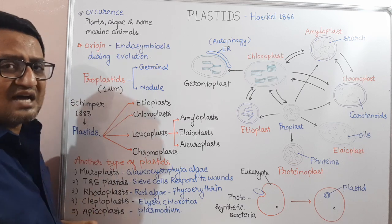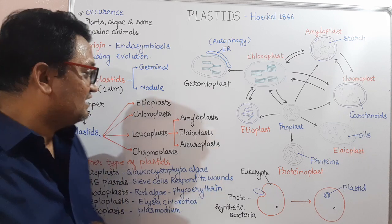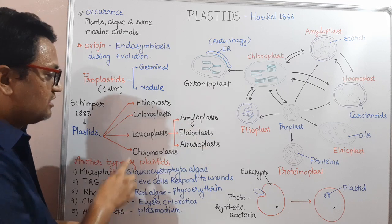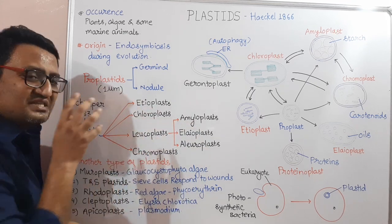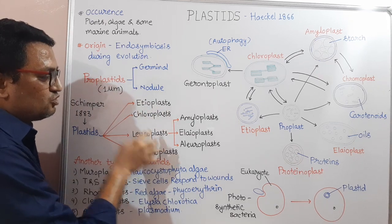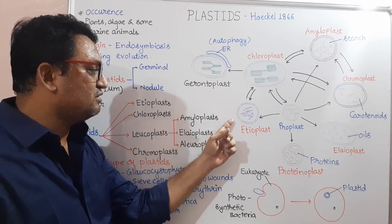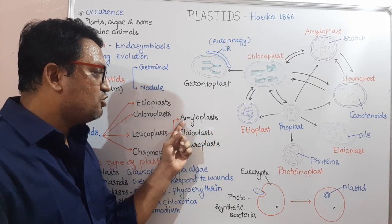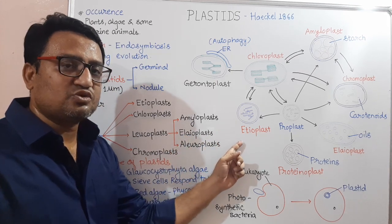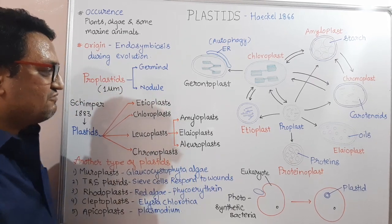Chloroplasts are the chlorophyll-bearing Plastids present in all green plants, and the detailed study of Chloroplasts will be covered in the next lecture. Next, Leucoplasts — 'leukos' means colorless, 'plast' means molded, so colorless Plastids are called Leucoplasts. These Leucoplasts are classified into three types: the starch-storing Leucoplasts are called Amyloplasts, the oil-storing Leucoplasts are called Eleoplasts, and the protein-storing Leucoplasts are called Aleuroplasts.